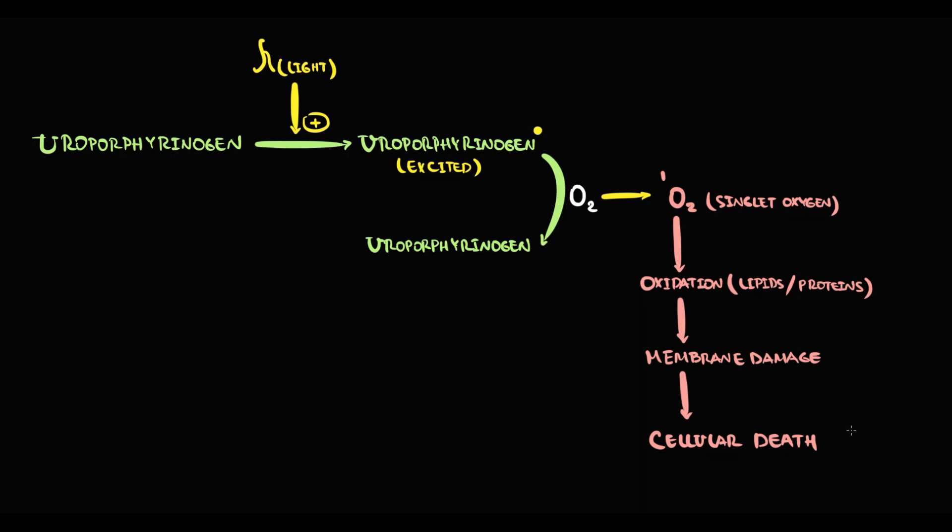Because it's light that triggers this entire process of cellular death, the most vulnerable cells are epithelial cells that cover the skin on most sun-exposed parts of the body. Most commonly, it's back of the hands, forearm, neck, face, and feet. On skin, these damage to epithelial cells markedly increase the fragility of the skin and manifests typically as blisters and vesicles.